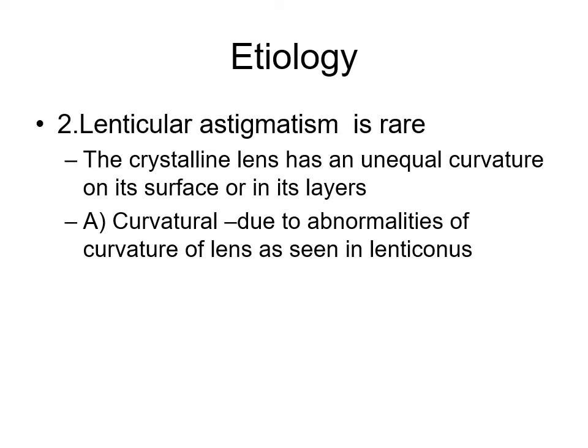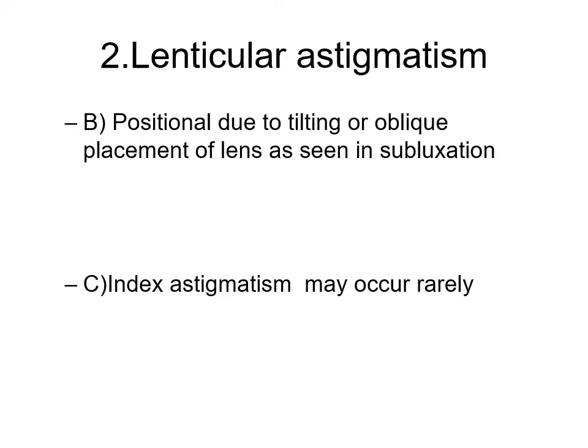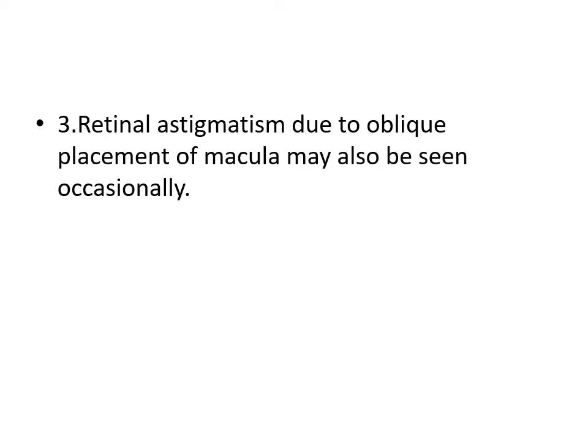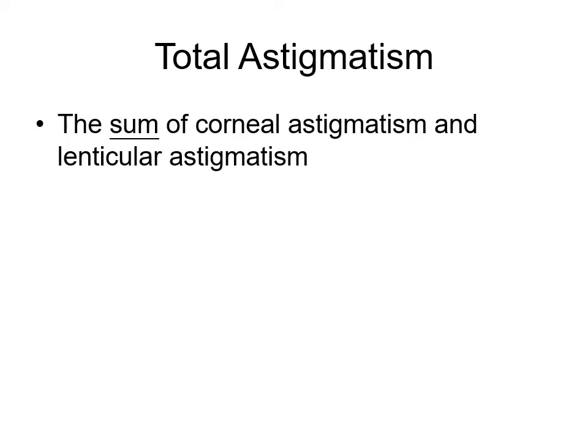In lenticular astigmatism, which is rare, the crystalline lens has an unequal curvature — due to abnormalities of lens curvature. There can also be positional astigmatism due to tilting or oblique placement of the lens, as seen in subluxation. Index astigmatism may occur rarely due to changes in the cortical and nuclear fibers. Retinal astigmatism due to oblique placement of the macula may also be seen occasionally. Total astigmatism is the sum of corneal astigmatism and lenticular astigmatism.